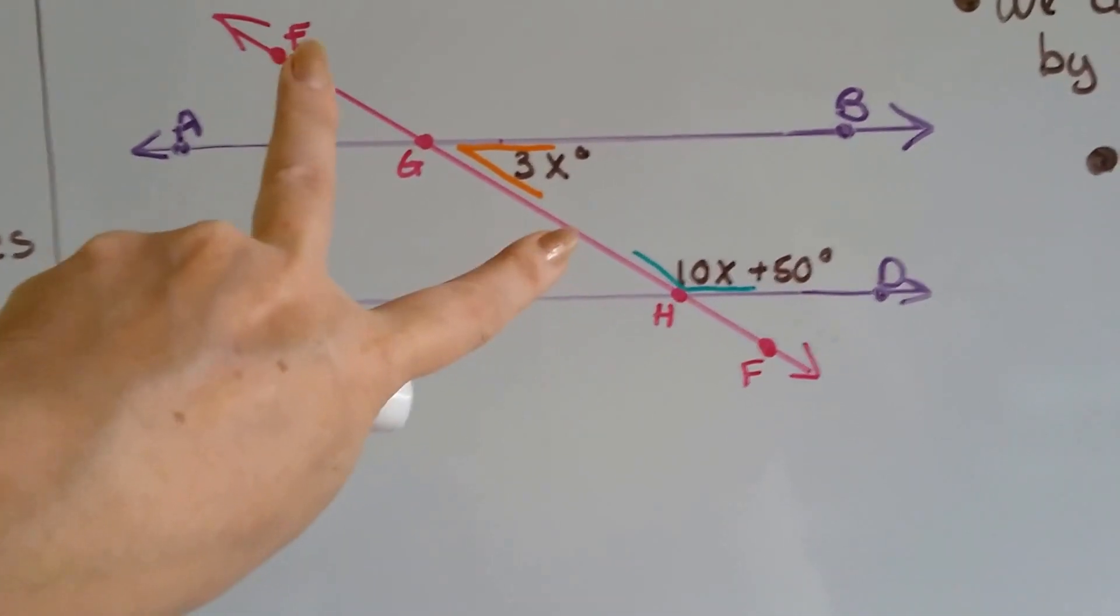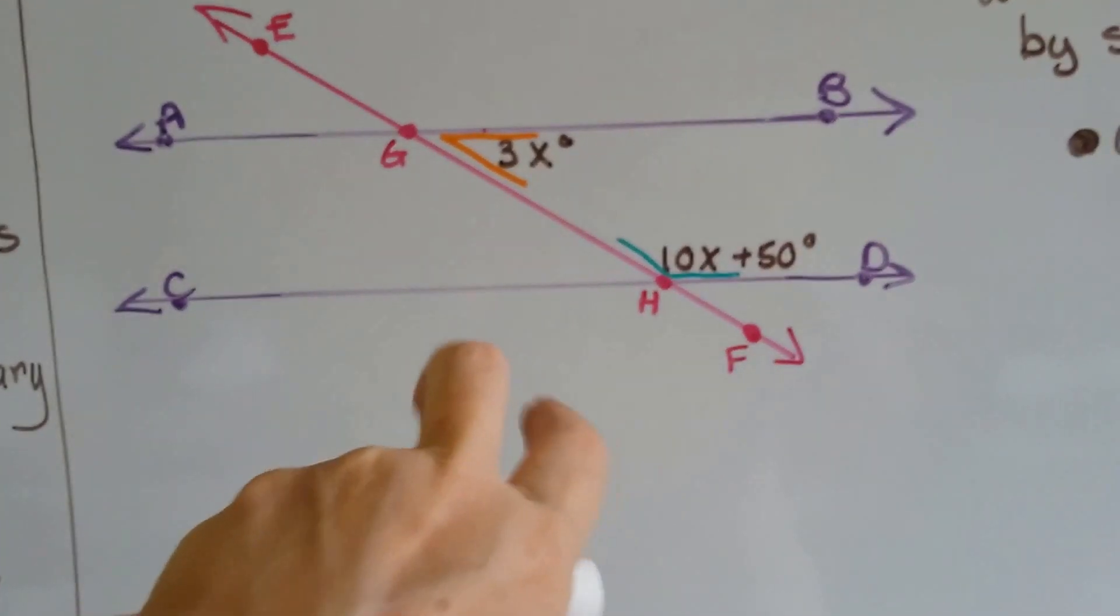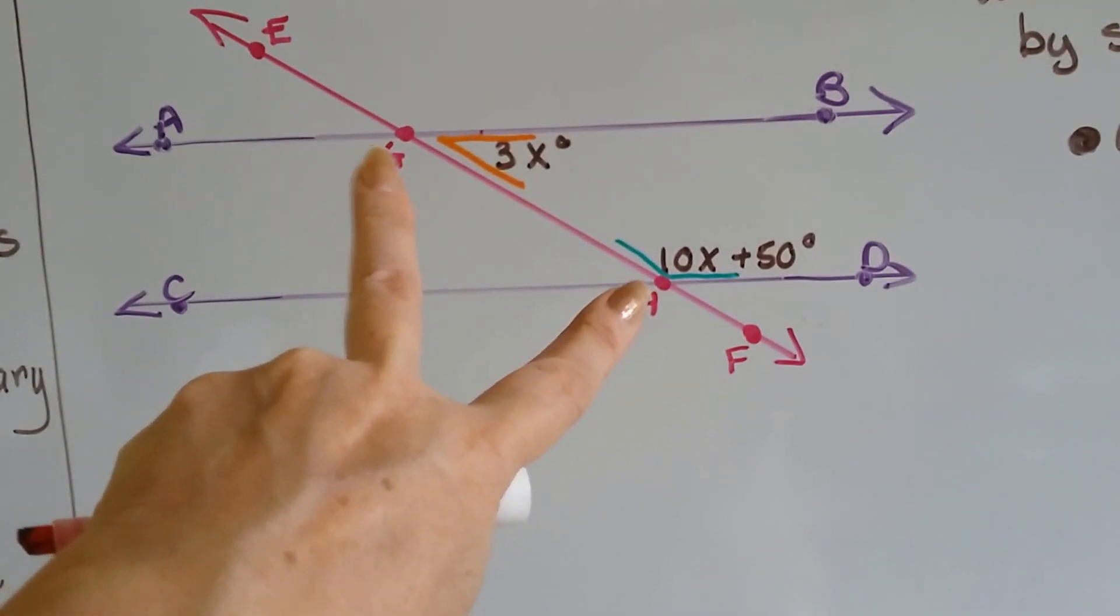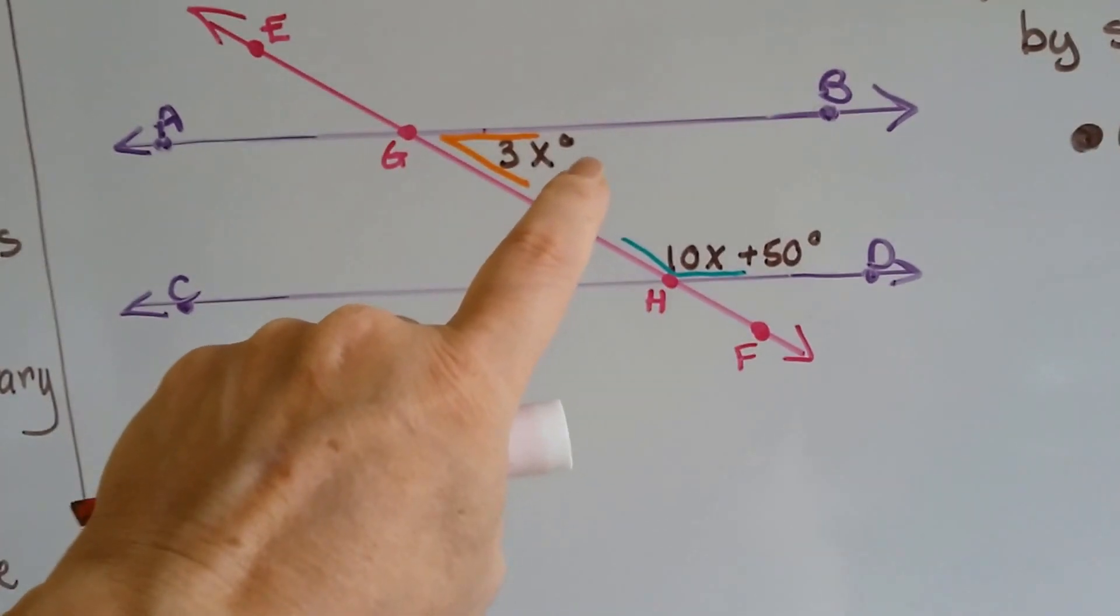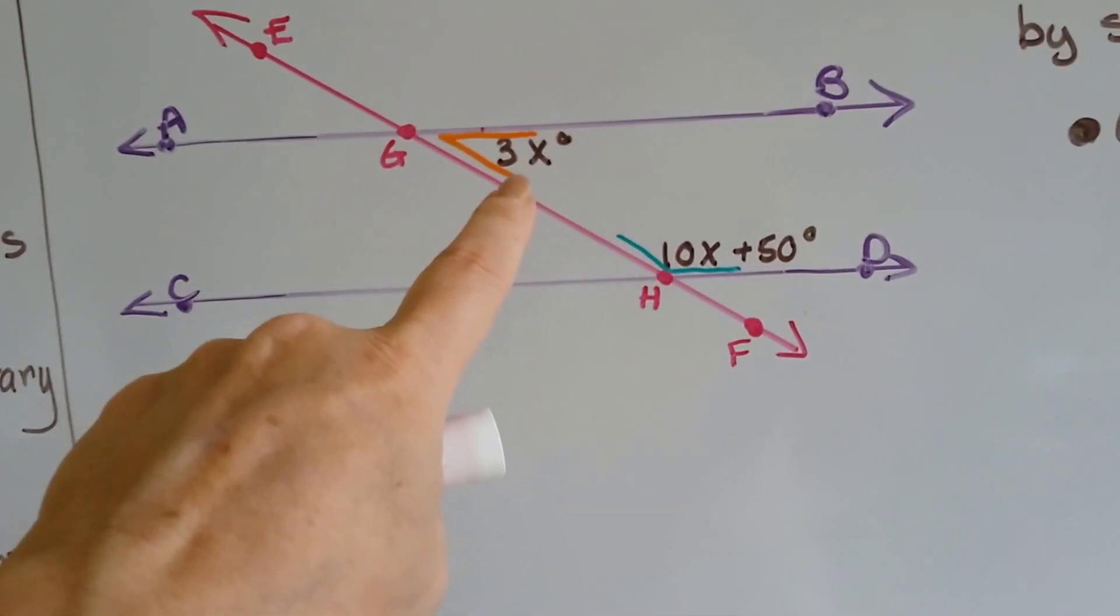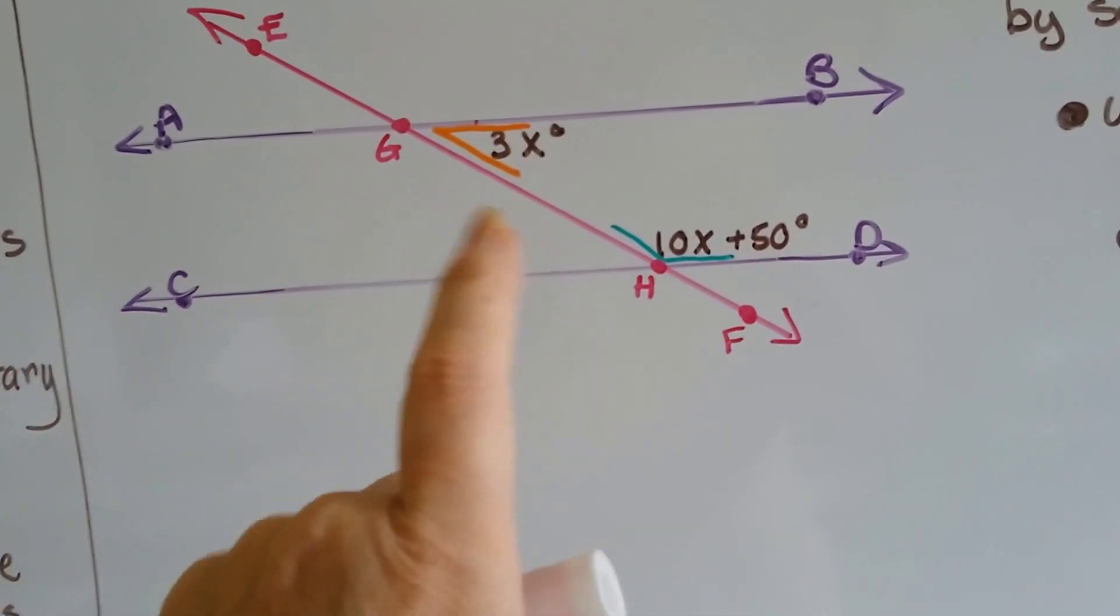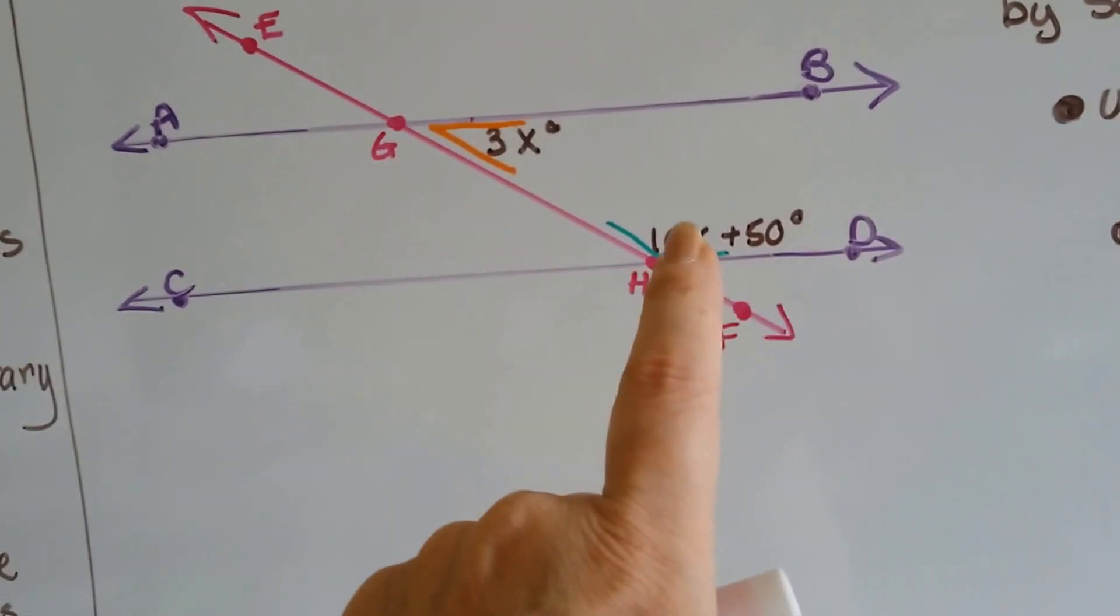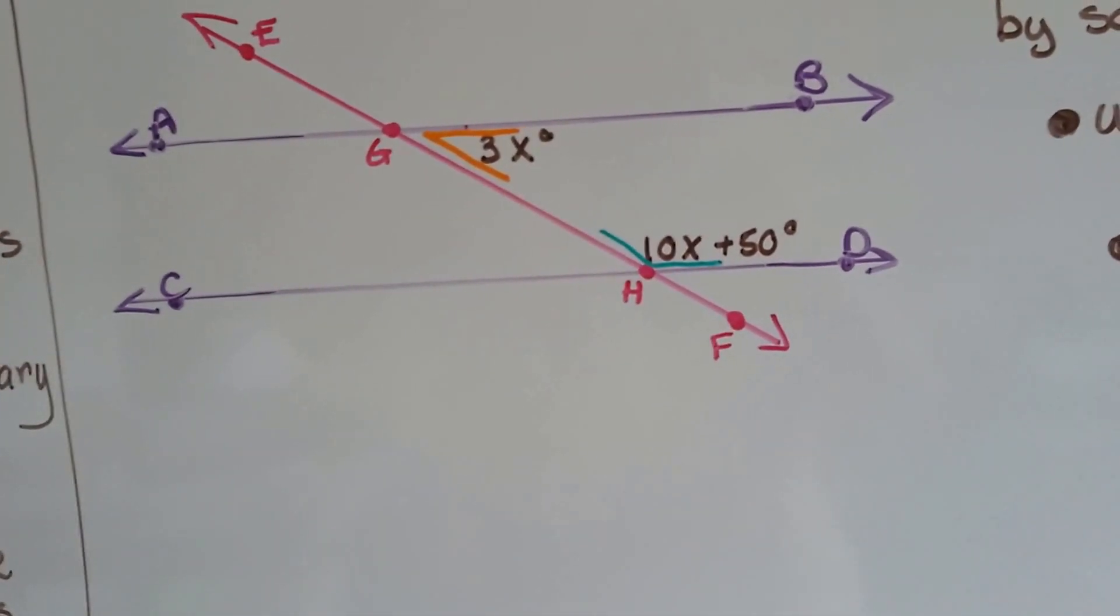And it's got transversal EF that is intersected at points G, H. We can see that the angle of BGH is 3x, and the angle of GHD is 10x plus 50.